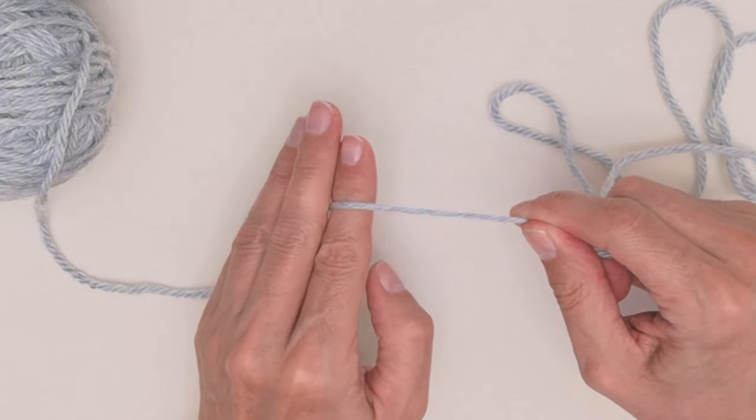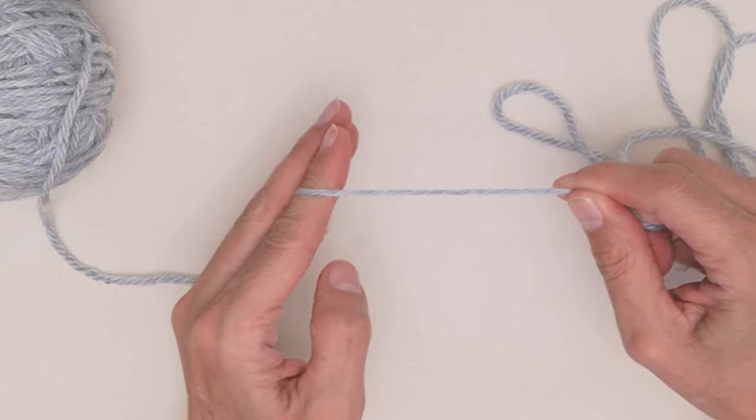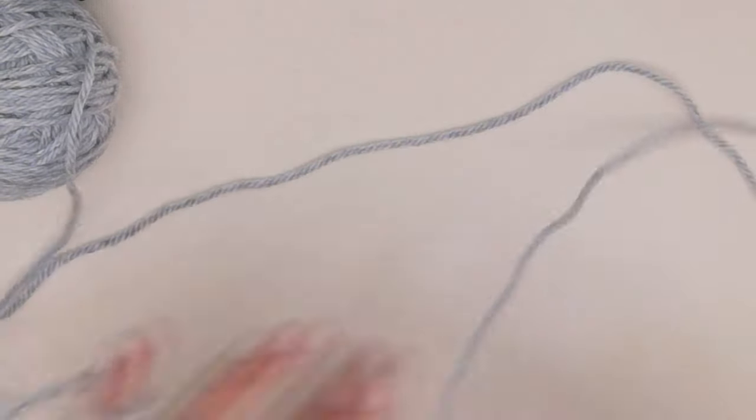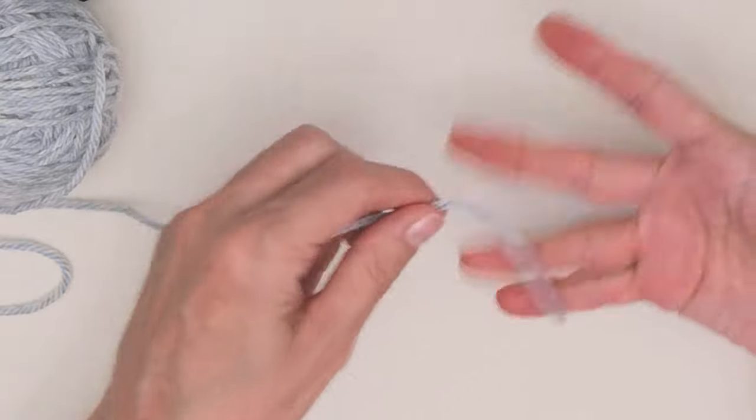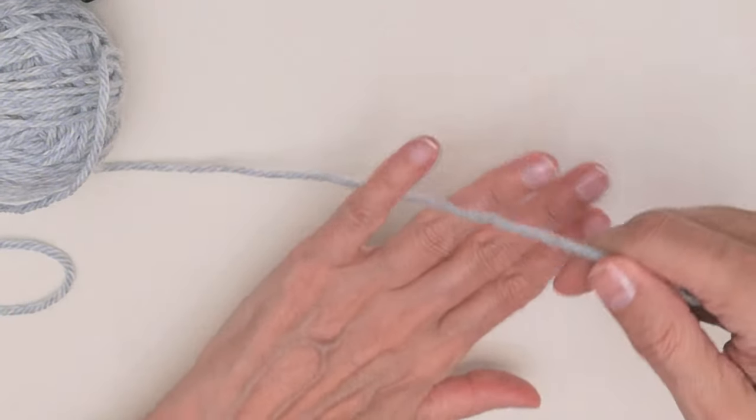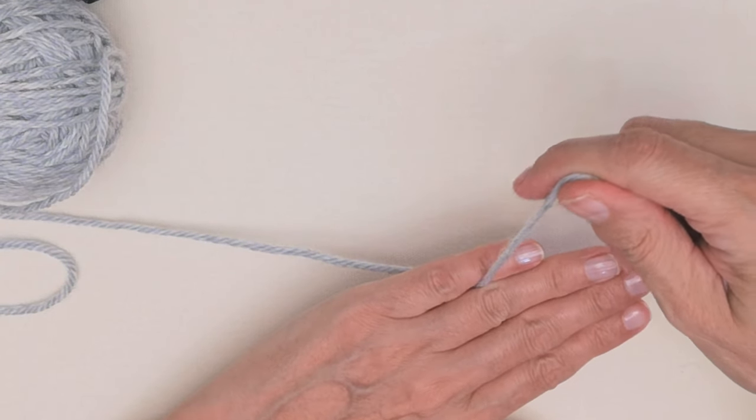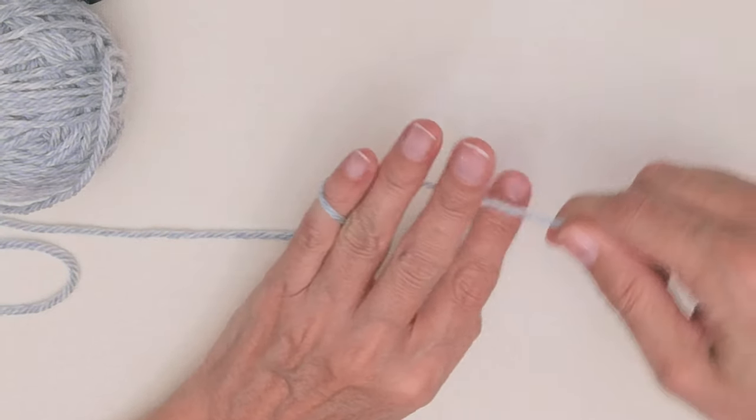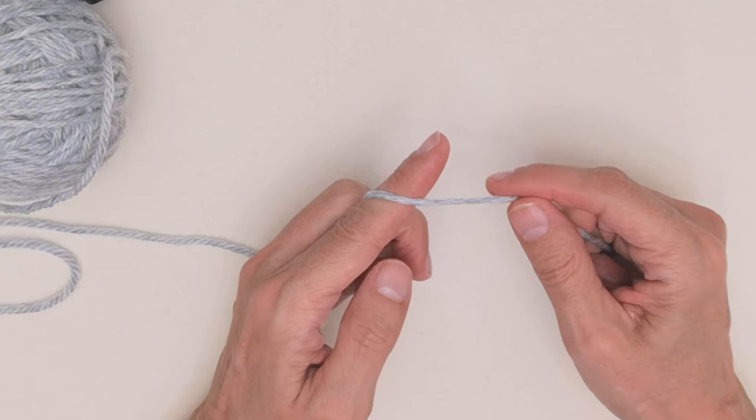One more time: hold that short end in your dominant hand, place it between your baby finger and ring finger, wrap it underneath, and then over your pointer finger.